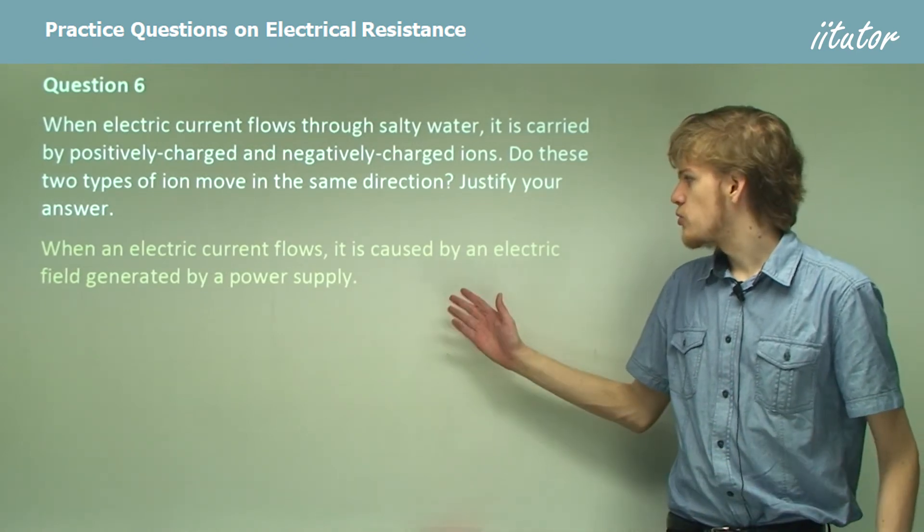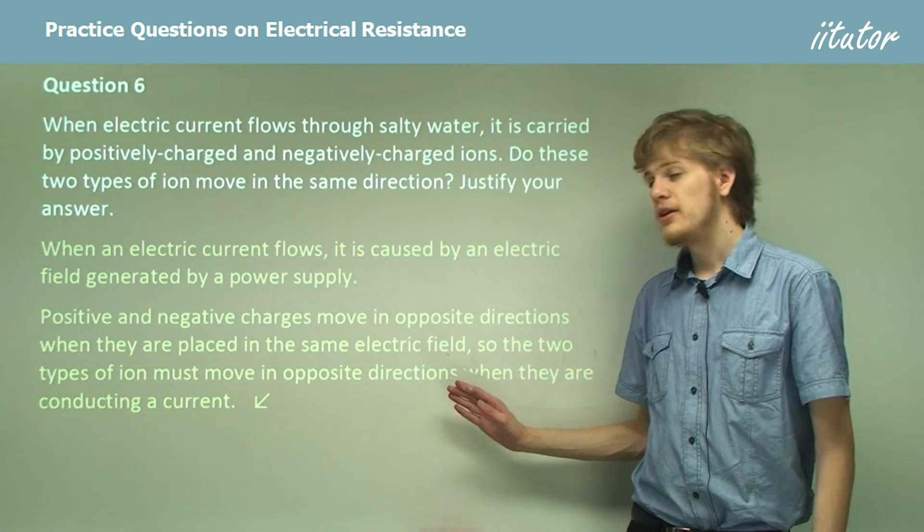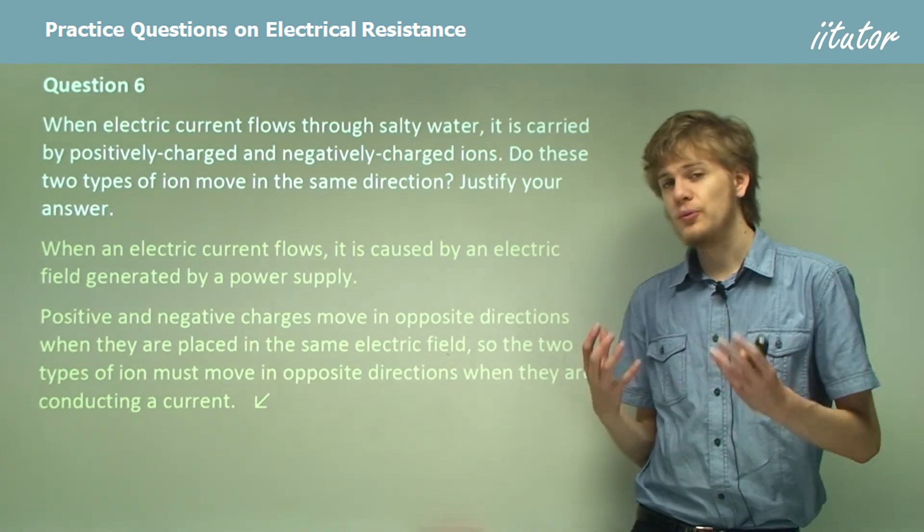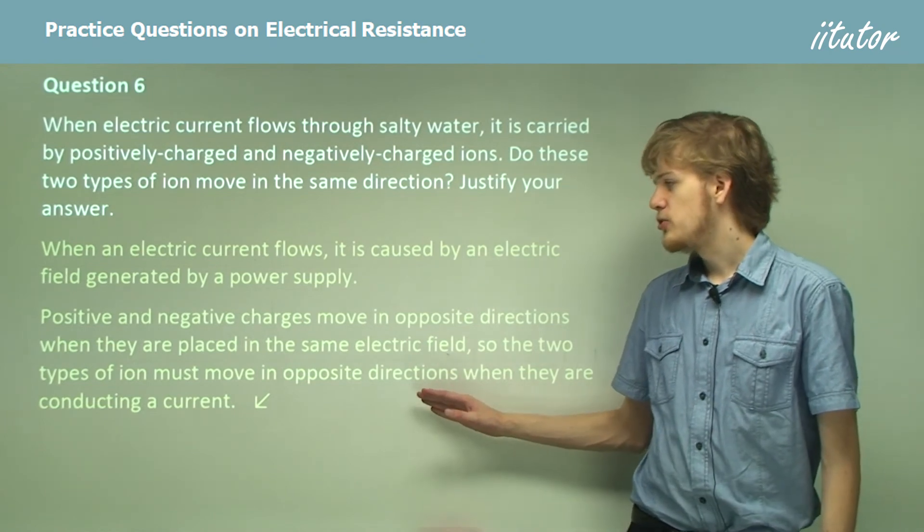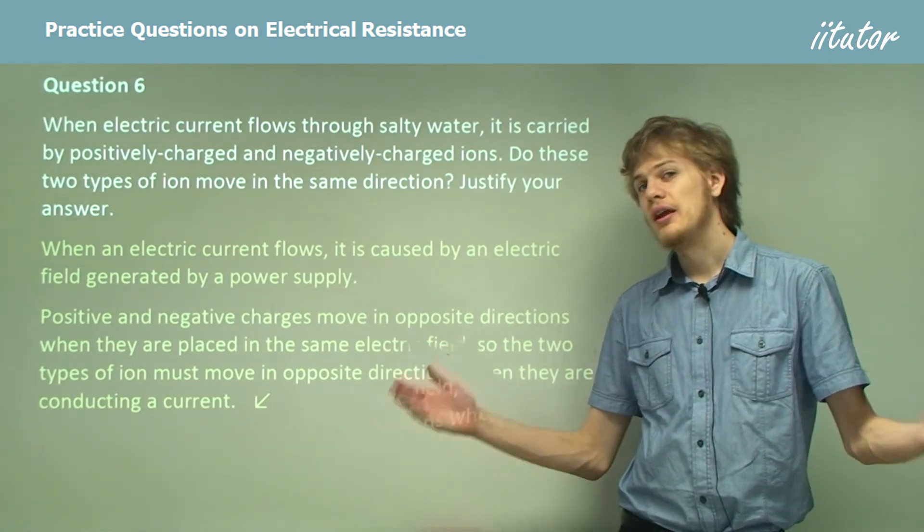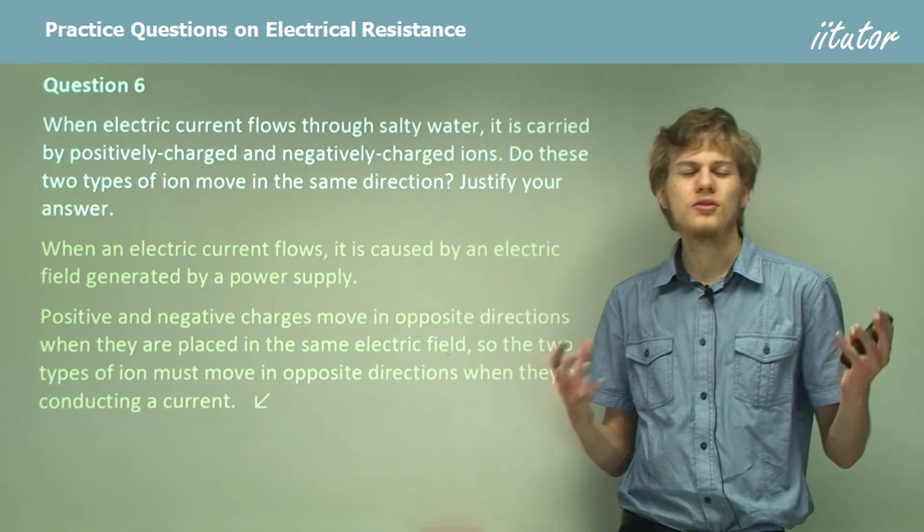When an electric current flows, it is caused by an electric field generated by a power supply. Positive and negative charges move in opposite directions if they're placed in the same electric field. And this means that the two types of ions will move in opposite directions in order to carry the current in the same direction.